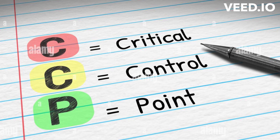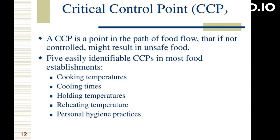Critical Control Point, CCP. CCPs are specific points or steps in a food production process where controls can be applied to prevent, eliminate, or reduce food safety hazards to an acceptable level. CCPs are critical because failure to control the identified hazard at these points may result in an unacceptable risk to consumer health.